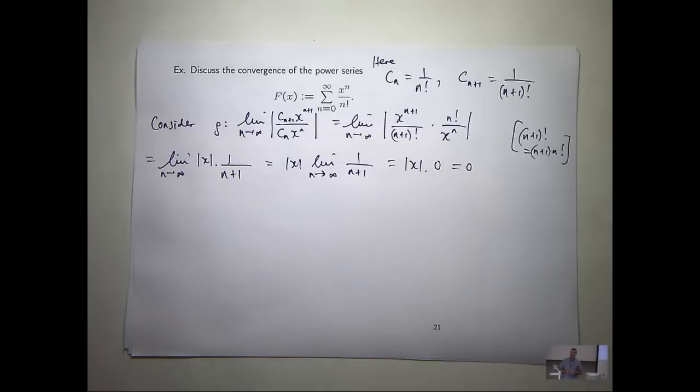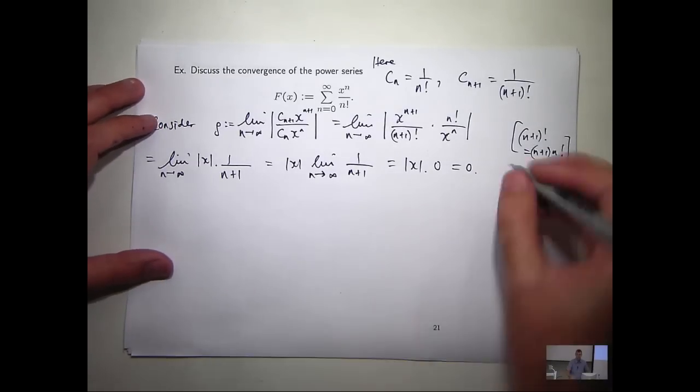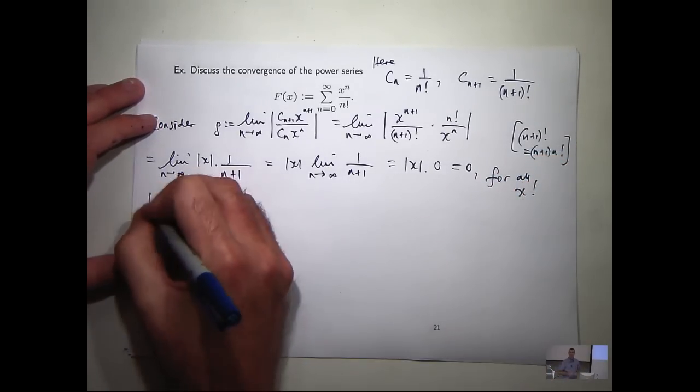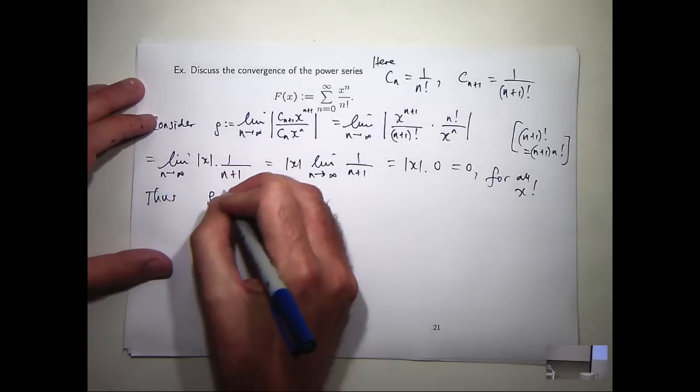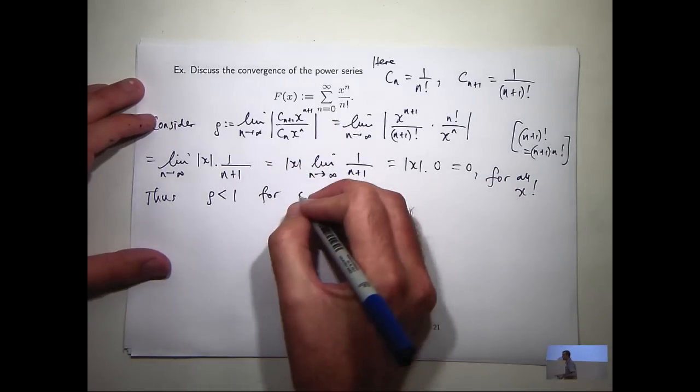Now, that's true. It's zero, no matter what x is. For any finite number x, that limit is always zero. So the limit of our rho is... All right, I guess it's zero, and so it's less than one for all x.